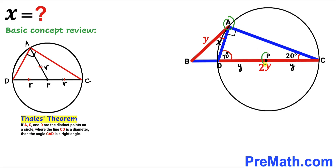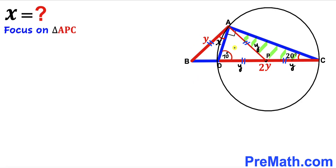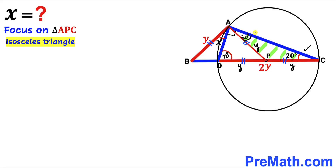Connecting vertex A to center P, we see AP is the radius Y. So DP equals PC equals AP, all equal to Y. Since AB is also Y, now let's focus on triangle APC. This is an isosceles triangle since AP equals PC, so the base angles are congruent. Since angle ACP is 20 degrees, the angle CAP must also be 20 degrees.